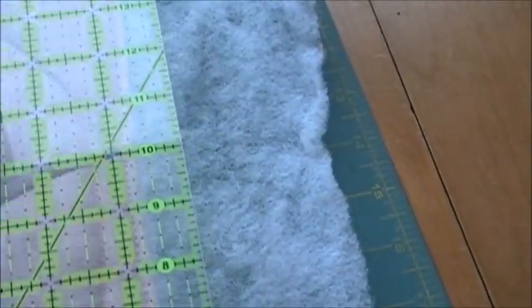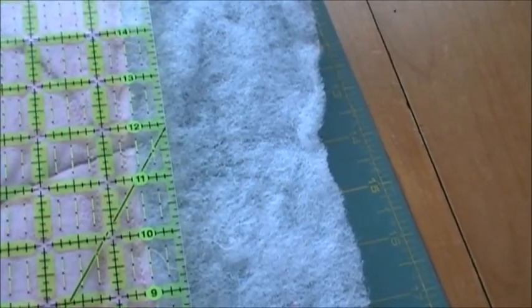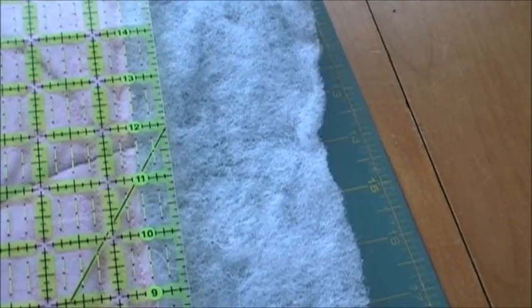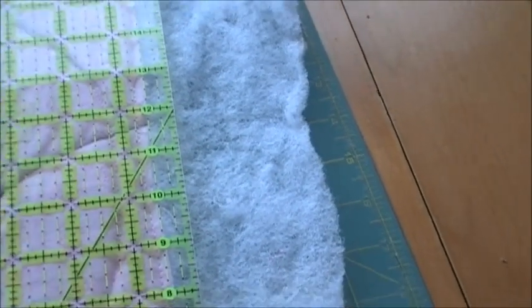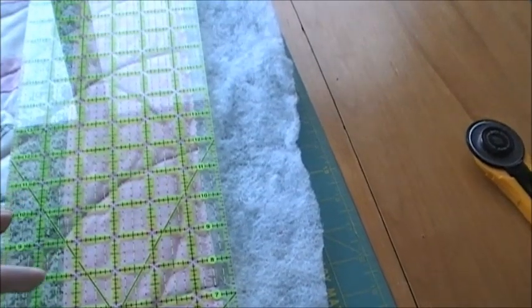So when you lay your ruler down you're going to line it up with your edge of your fabric, the top, and you're going to make sure that there is no backing fabric anywhere at all.